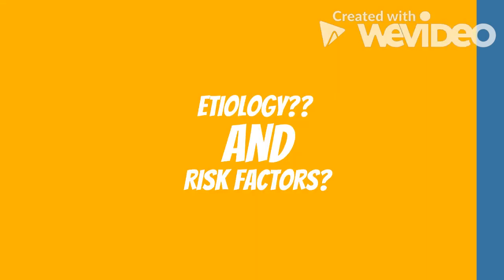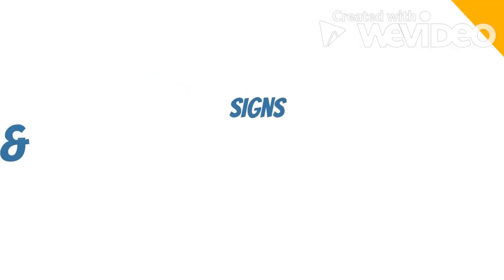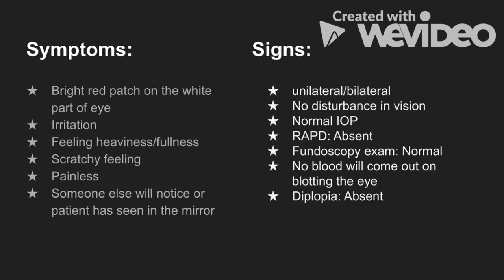Common causes of subconjunctival hemorrhage include coughing, sneezing, straining, stress, and vomiting. Risk factors include diabetes and high blood pressure. To properly manage bloodshot eyes, it is necessary to diagnose based on signs and symptoms.